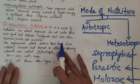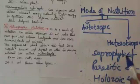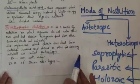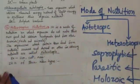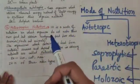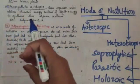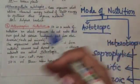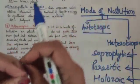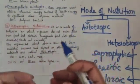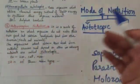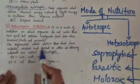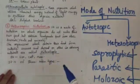Heterotrophic mode of nutrition is divided into three main types: saprophytic, parasitic, and holozoic. It is a mode of nutrition in which an organism obtains ready-made food from an outside source for both body-building and energy liberation. In autotrophic nutrition an external energy source like sunlight is required, but in heterotrophic nutrition energy is obtained from food. Organisms that obtain food from outside sources and depend on others are called heterotrophs — examples include lion, cat, and humans.